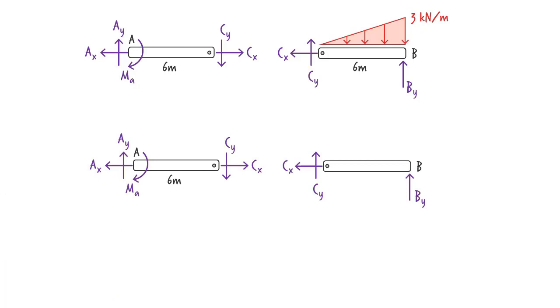In this example, the magnitude of the equivalent concentrated load is the area of the triangle representing the load. This load is to be placed at the geometric center of the triangle.